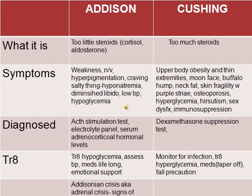Treatment for Addison: first treat the hypoglycemia, assess blood pressure, give lifelong medications like steroids — prednisone, cortisone — and provide emotional support. Treatment for Cushing: they have too much steroids, so monitor for infection because they're immunosuppressed, treat hyperglycemia, give medications, and remember with steroids you always want to taper them — put them on fall precautions.